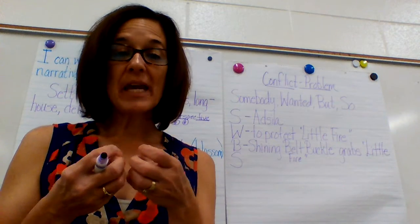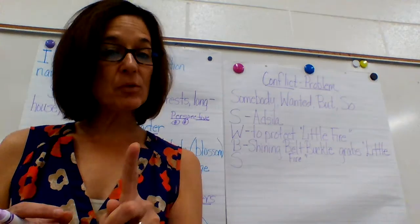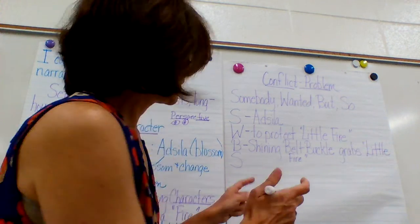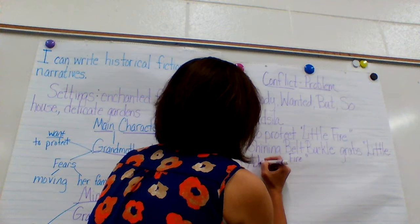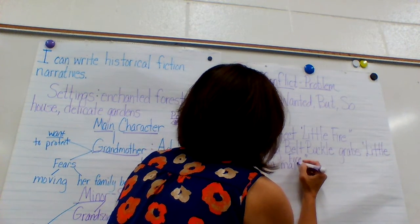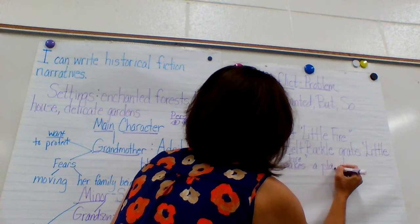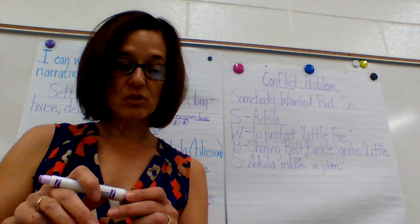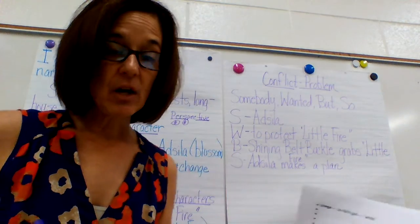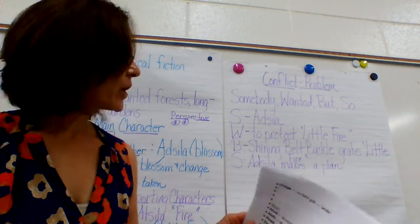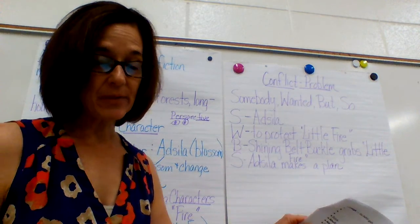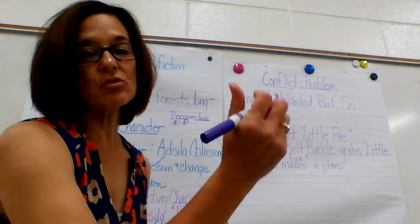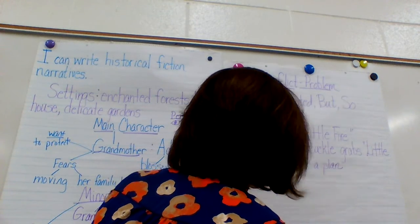So Adsela has to make a plan. I told you her name means blossom, and she's going to blossom and change. She might have been fearful, but she's getting ready to make a plan. Adsela makes a plan — she is going to become much more assertive and think of a plan to save her grandson. I want you to get this part finished today: think of what your major conflict is going to be, and then we're going to make a story mountain. I'm going to go ahead and draw it so you can be thinking about it.